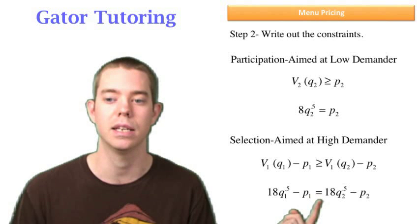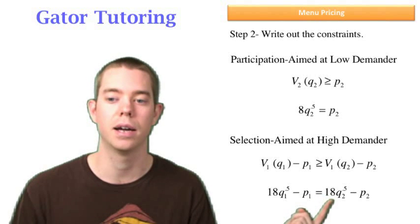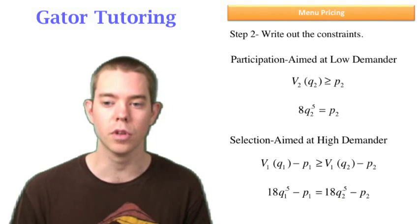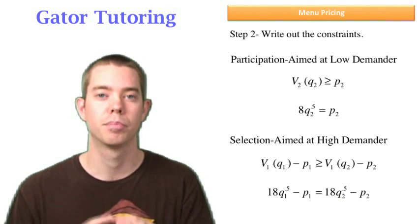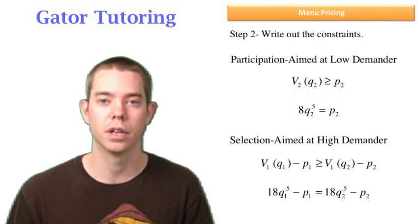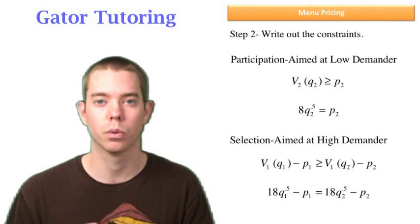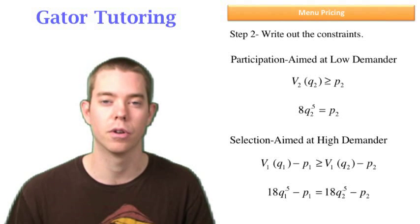We're going to make it equal to if the same guy represented by the 18 were to buy the small pack of gum, which is the q2, the small bundle, at the price of the small bundle. So we're going to make the value he gets out of purchasing the big bundle greater than the value he gets out of purchasing the small bundle. Again, setting it equal to solve, but think about it as greater than.